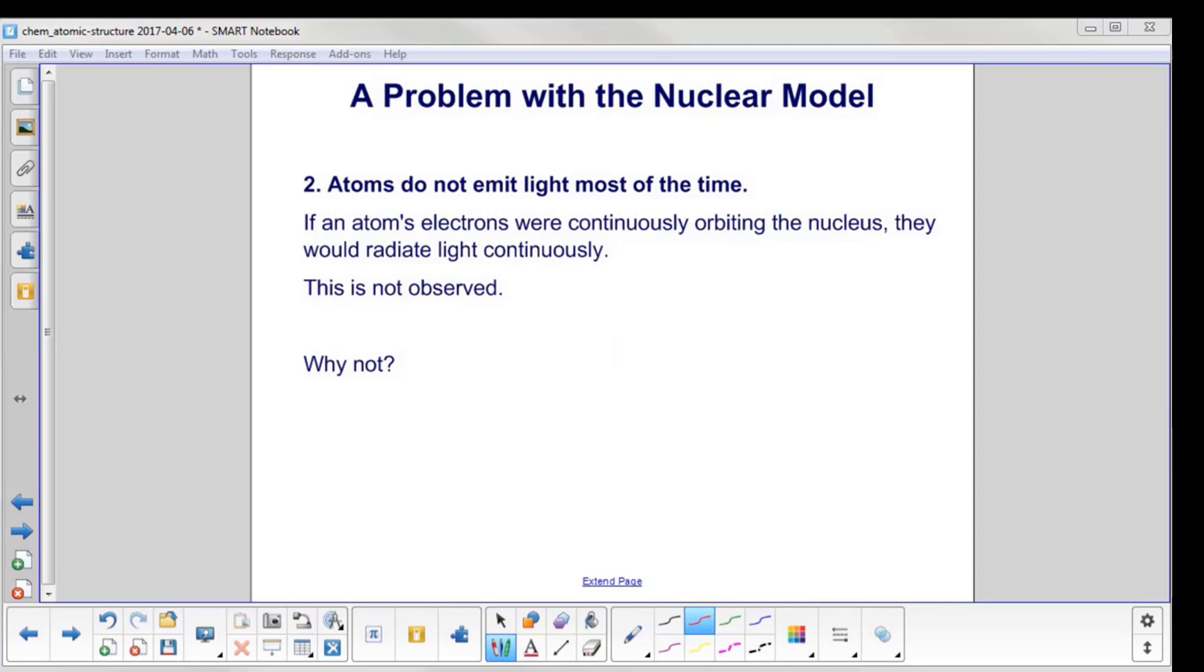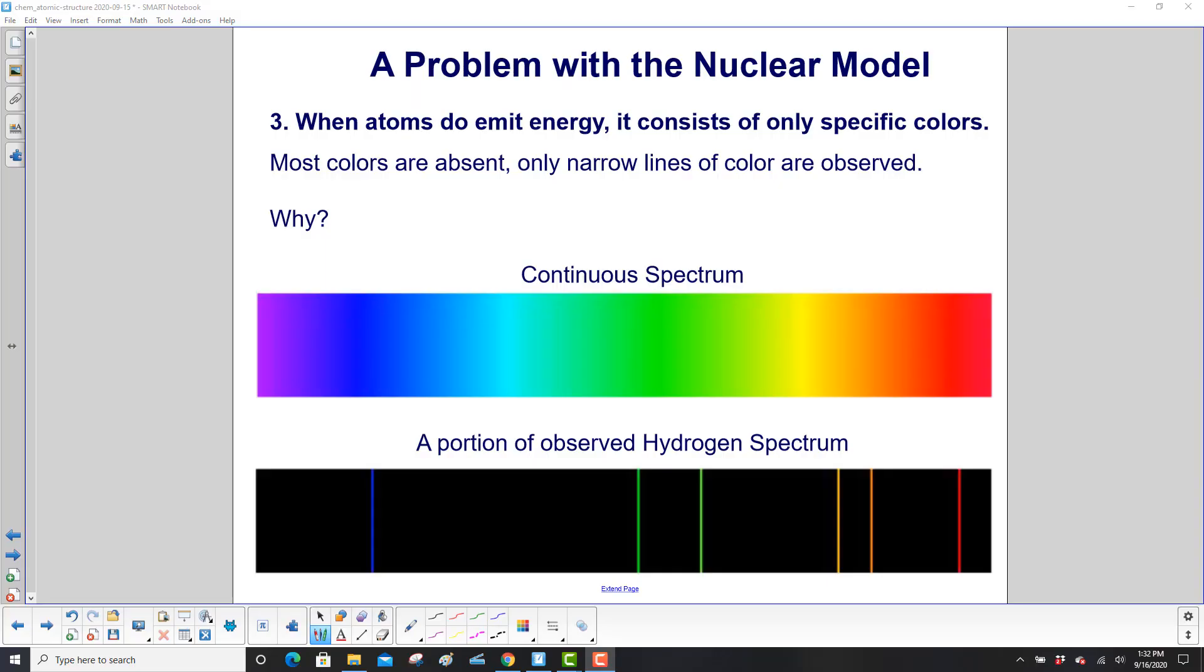And by the way, we don't expect an answer here. We're just kind of following on with the problems of the nuclear model. When atoms do emit energy, it consists only of specific colors. Most colors are absent. Only narrow lines of color are observed. Why?